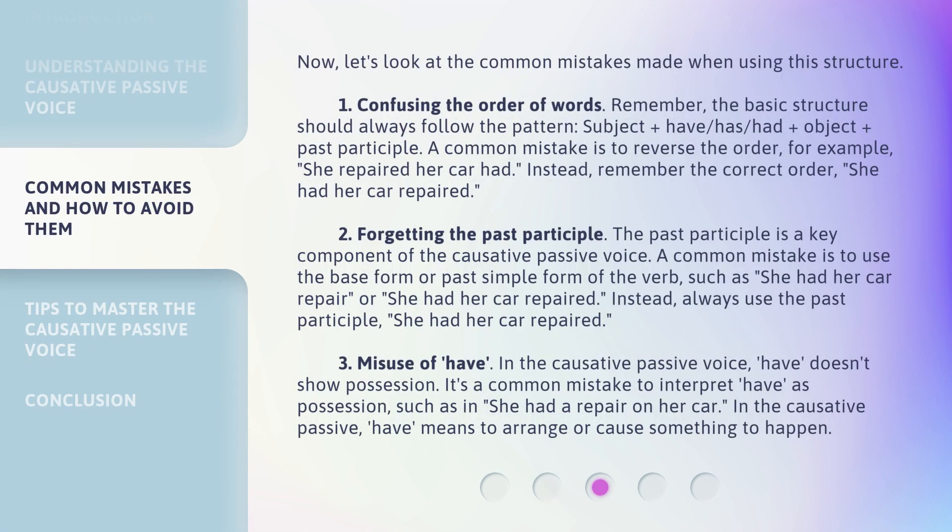Now let's look at the common mistakes made when using this structure. Number one: confusing the order of words. Remember, the basic structure should always follow the pattern: subject plus have/has/had, plus object, plus past participle. A common mistake is to reverse the order — for example, 'she repaired her car had.' Instead, remember the correct order: 'she had her car repaired.'